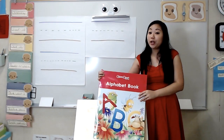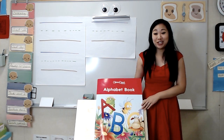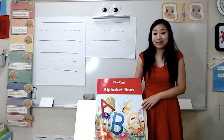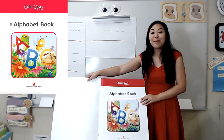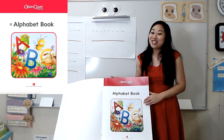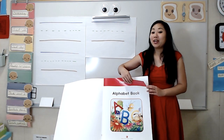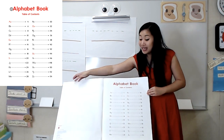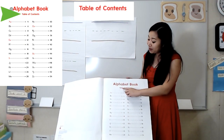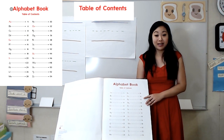Just like our big book of poems, this book also has a whole bunch of poems, but these poems are all alphabet poems. When I open it up, I see the title page — that's just to remind you of the title in case you forgot. And when I turn the page again, I see a special place called the table of contents. The table of contents tells you where to find things.